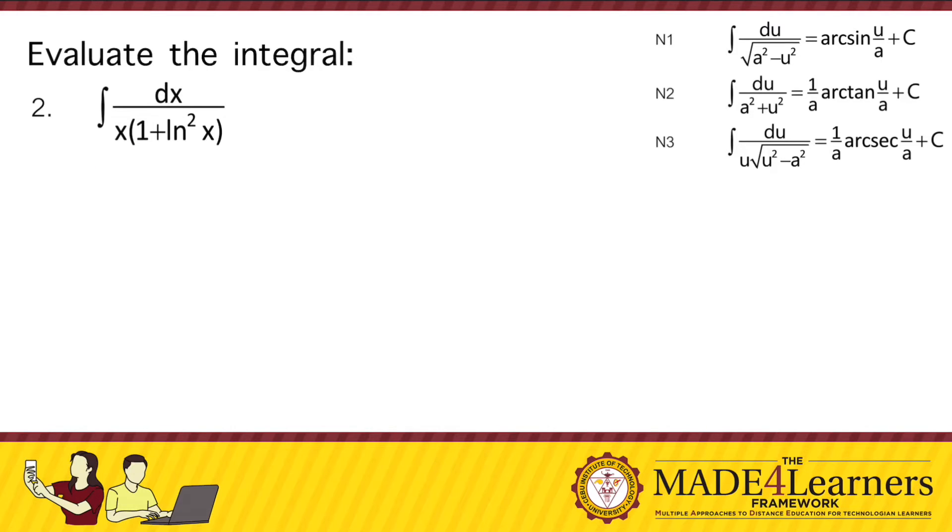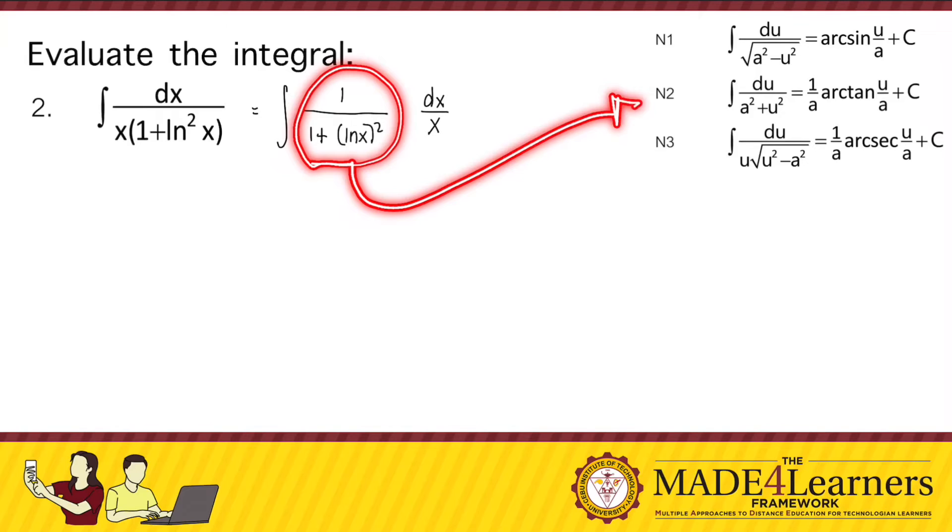This given can be rewritten as 1 over 1 plus ln of x quantity squared dx over x. And when we rewrite it that way, we can see that 1 over 1 plus ln of x quantity squared follows the pattern of n2 here.